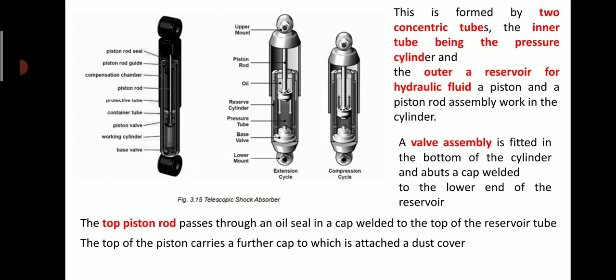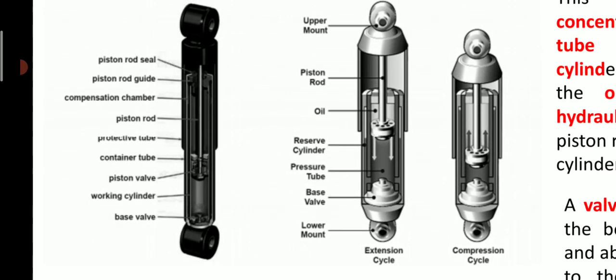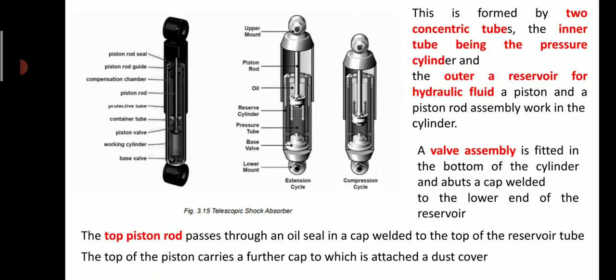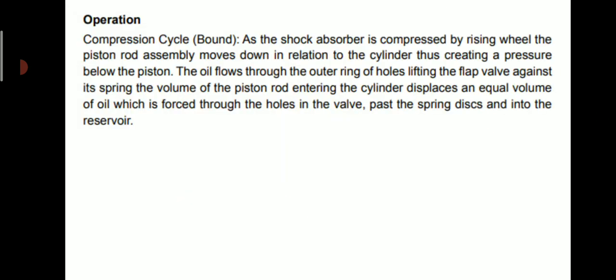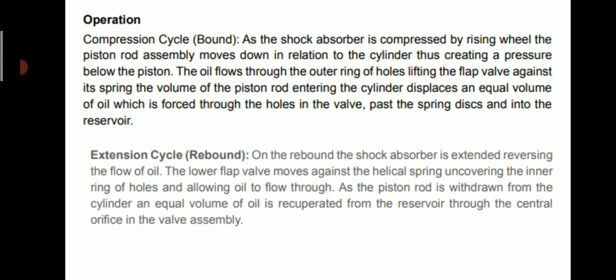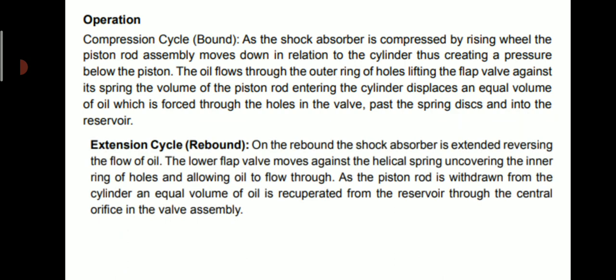This is a practical pictorial cutaway view of the telescopic shock absorber in which you will see different components such as the piston rod seal, piston rod guide, piston rod, and container tube. The operation is completed in two cycles: one is called the compression cycle and the second is called the extension cycle, also known as the bound and rebound cycles.